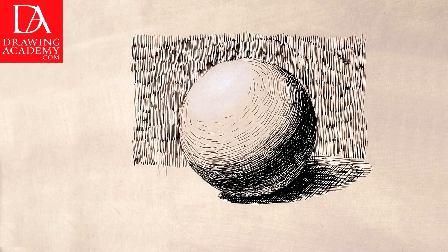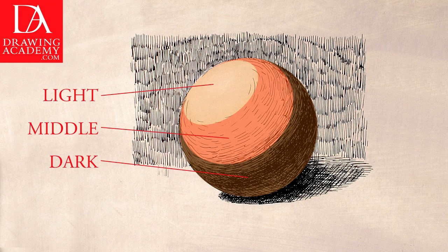Part 3. The sphere drawing can be divided into three distinct areas of rendering: the light, midtones, and dark values.